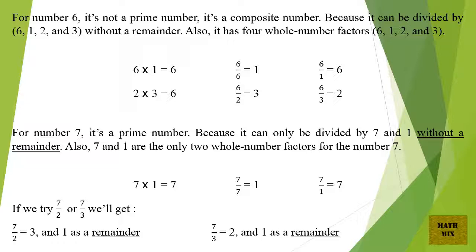For number 7, it's a prime number, because it can only be divided by 7 and 1 without a remainder. Also, 7 and 1 are the only two whole number factors for the number 7: 7 × 1 = 7, 7 ÷ 7 = 1, and 7 ÷ 1 = 7. If we try 7 ÷ 2 or 7 ÷ 3, we get 7 ÷ 2 = 3 with 1 as a remainder, and 7 ÷ 3 = 2 with 1 as a remainder.